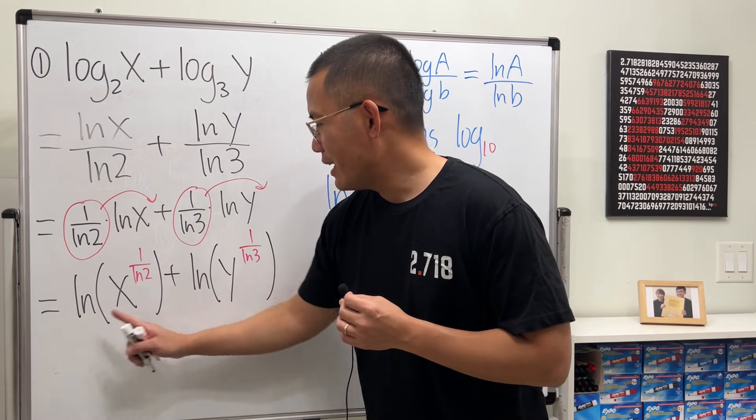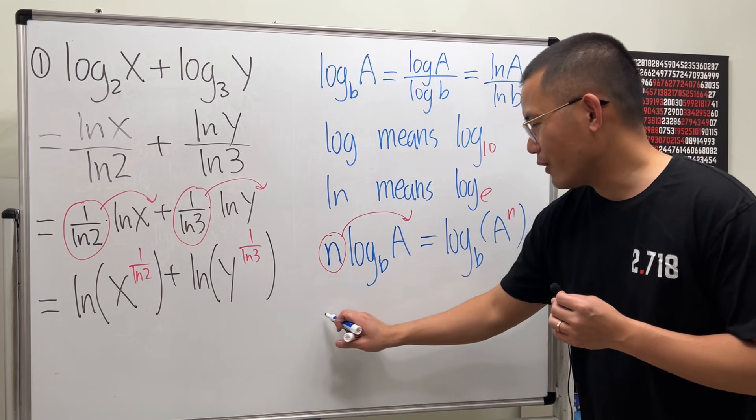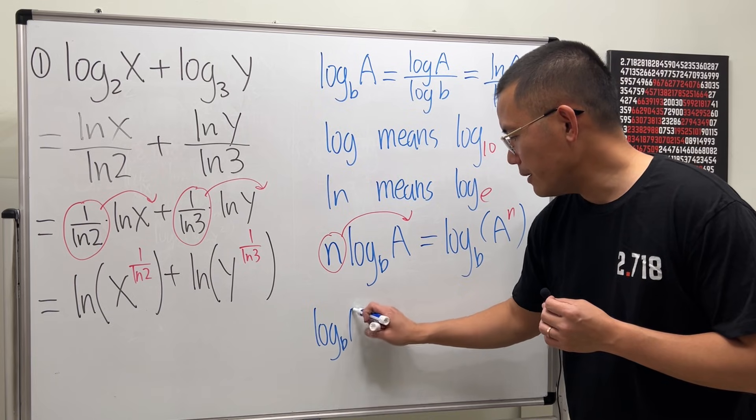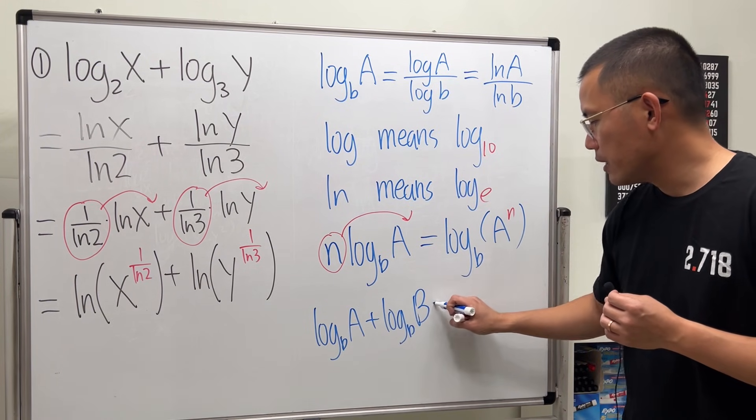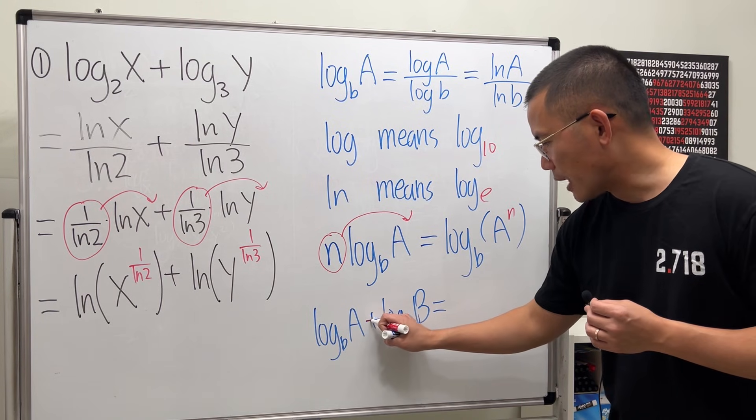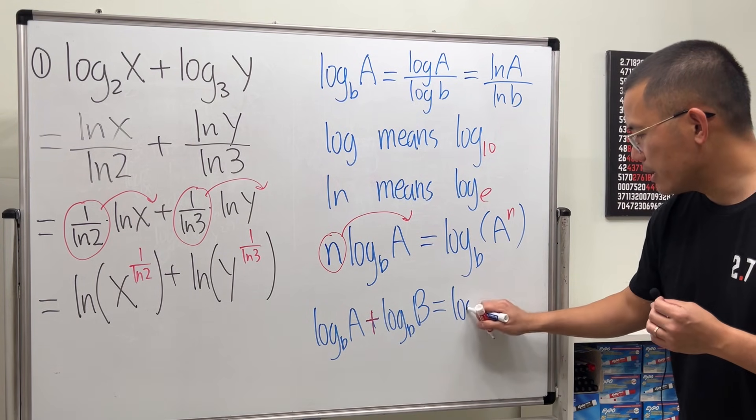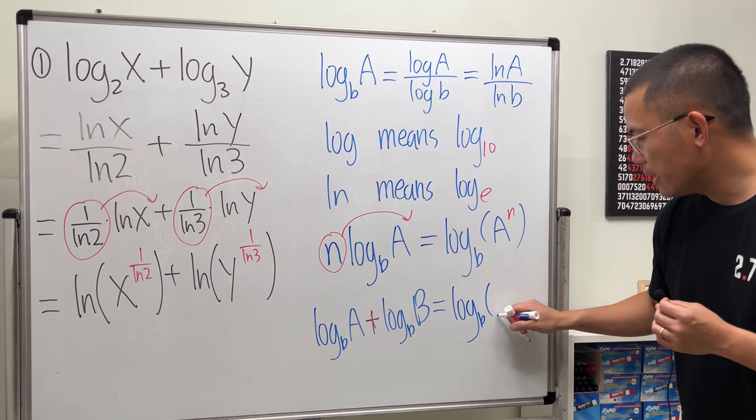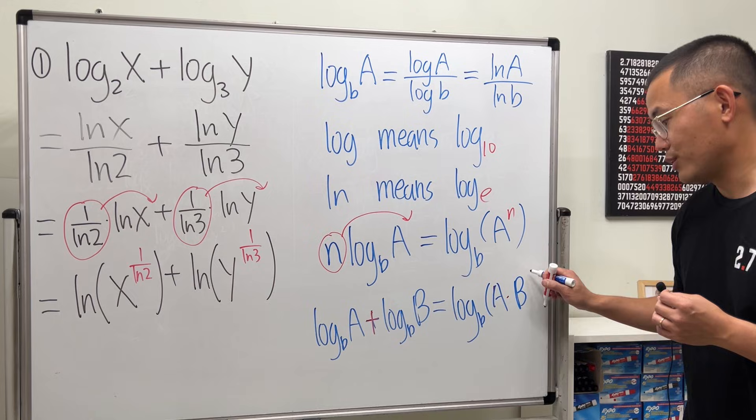Now, ln, ln, and we have an addition of two lns. So finally, if we have log base b of A, add it with log base b of B, if this is a sum, then we multiply the inside. This is log base b, and then we do A times B, just like this. If it's a subtraction, then we have a division inside.